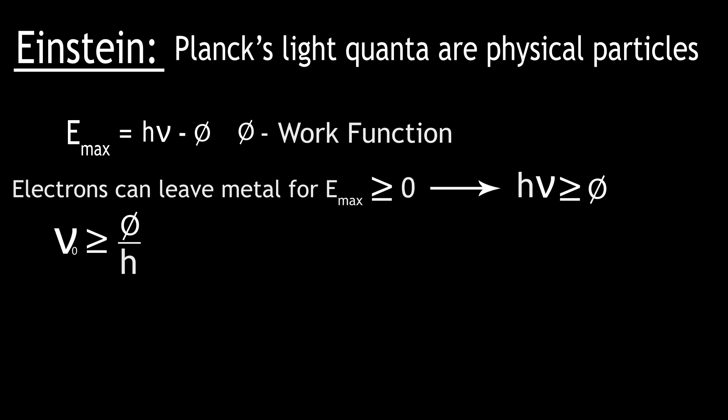The minimum frequency, nu nought, required for the electrons to overcome the work function will be when their maximum kinetic energy is zero. So this frequency nu nought is given by phi over Planck's constant. So we see Einstein's model predicts the existence of a threshold frequency, a minimum frequency required to observe photoelectric emission that depends on the material being used, as phi is a property of the metal.